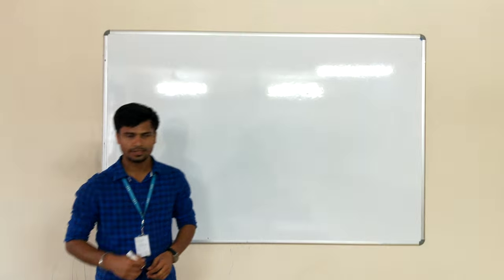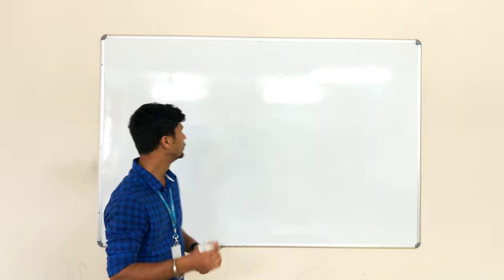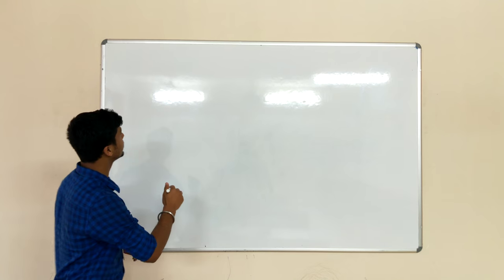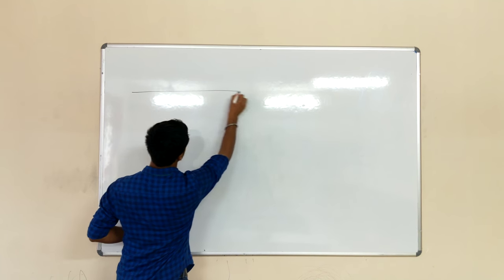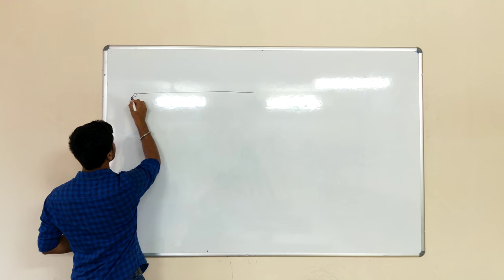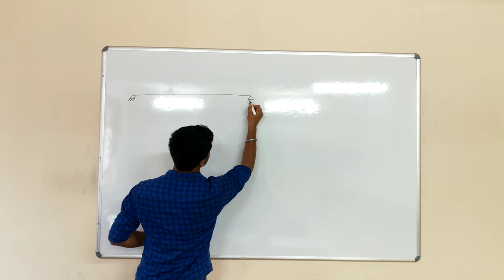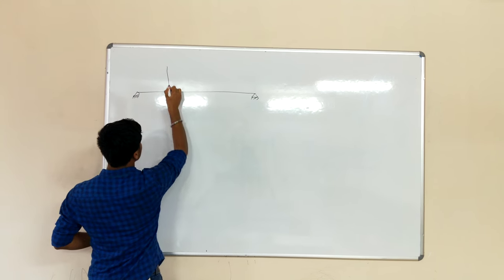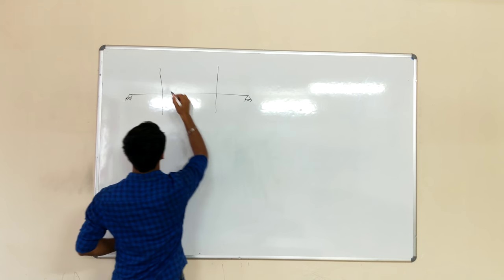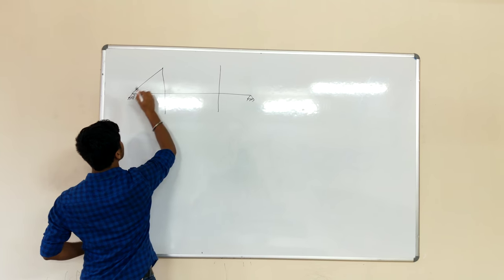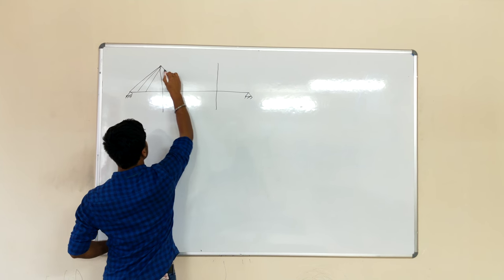Hello everyone. Today we are going to study about cable-stayed bridges. A cable-stayed bridge is basically a bridge which looks like a tent. The supports are fixed on both sides. It contains towers on each side, and these are cables attached to it in order to make it stable.